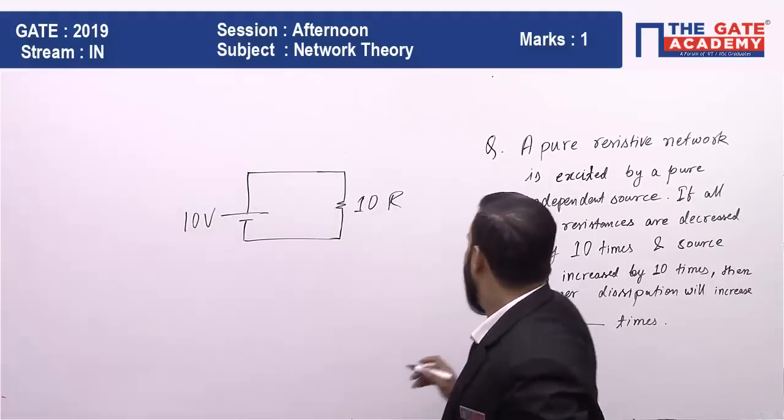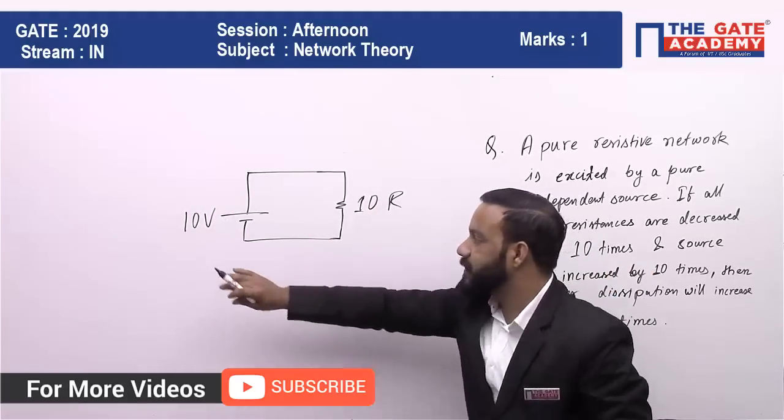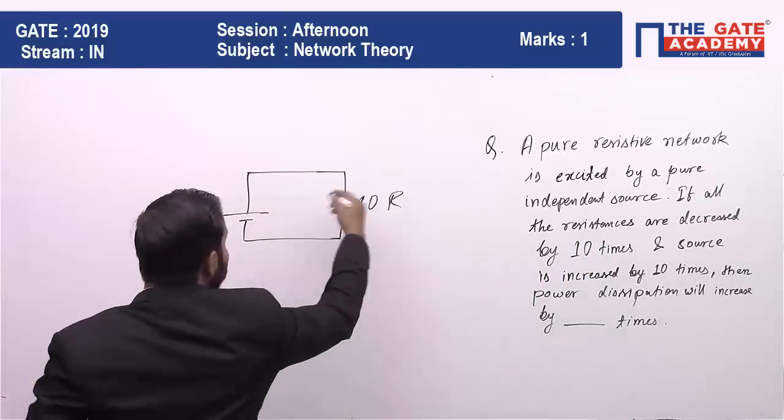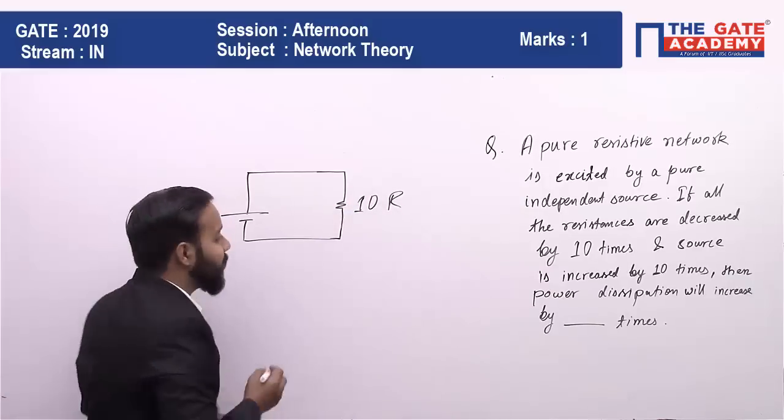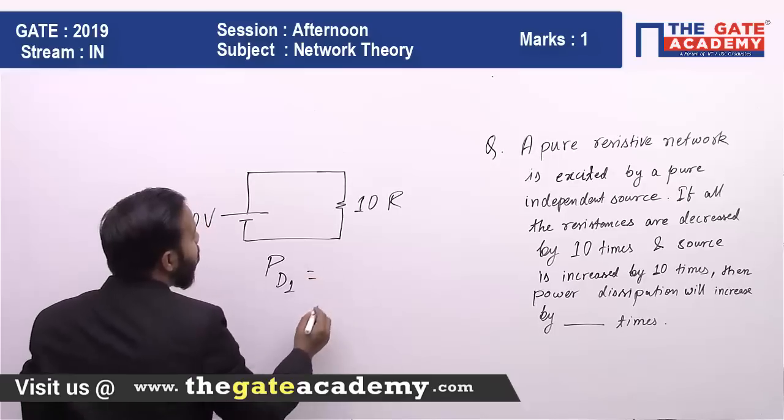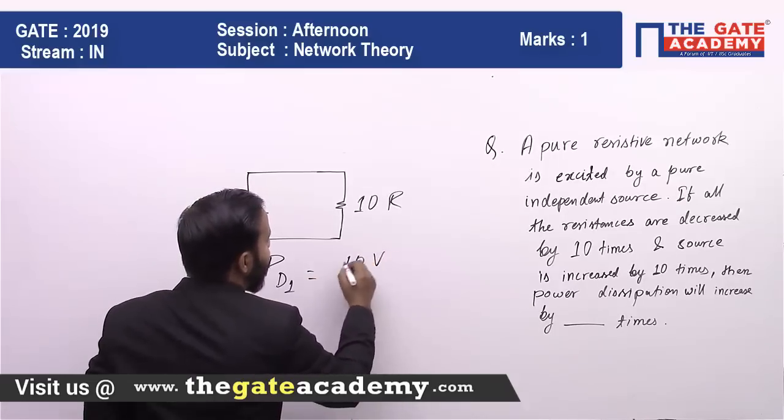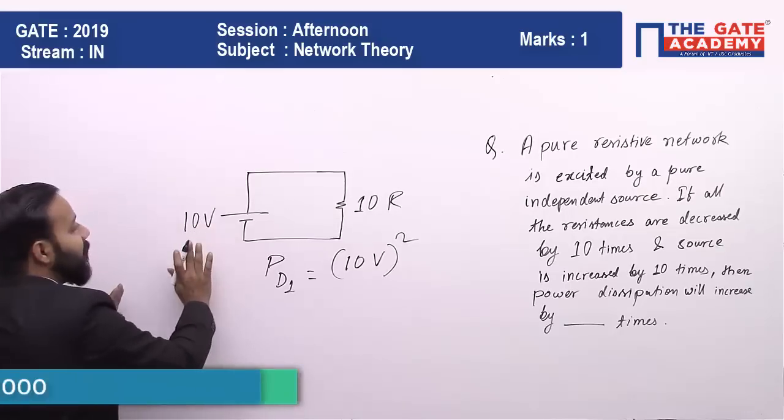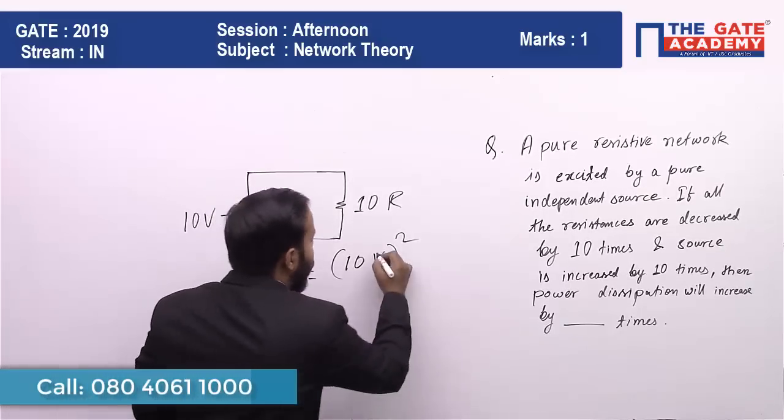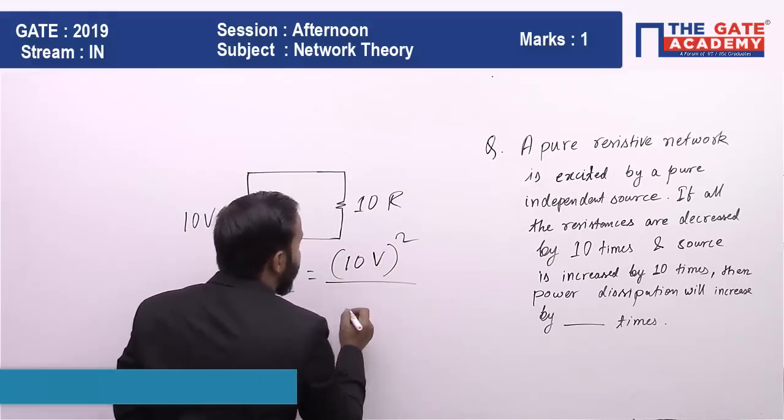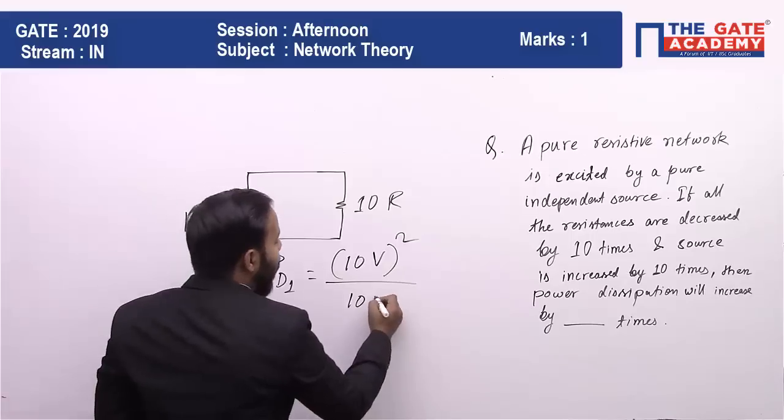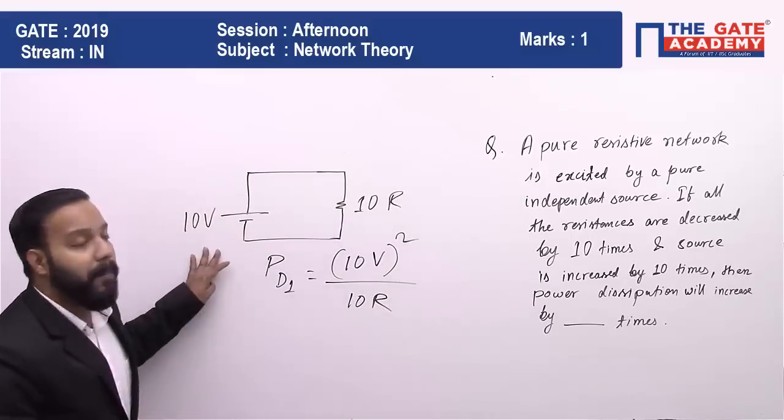First, for this case, we will find the power dissipation. P_D1 is (10V)² divided by 10R. Here V is just a variable. So P_D1 = (10V)²/(10R) is our power dissipation in the first case.